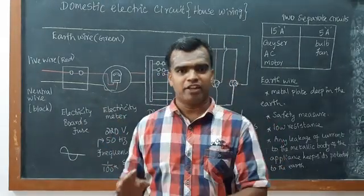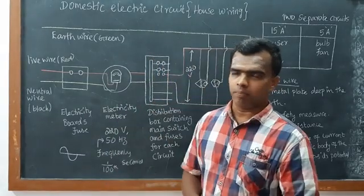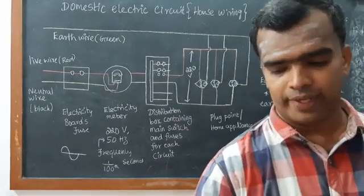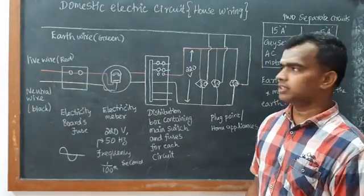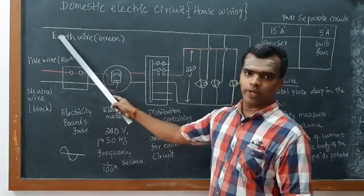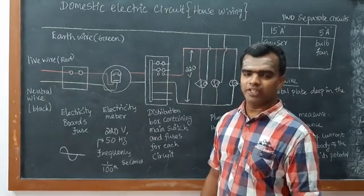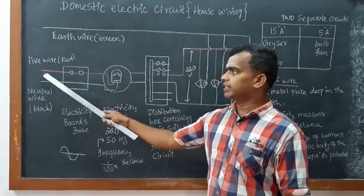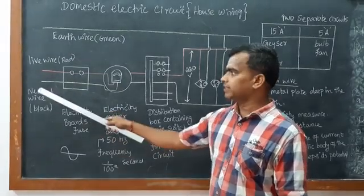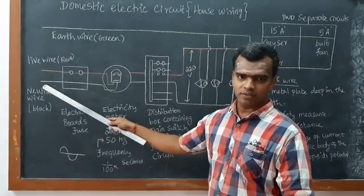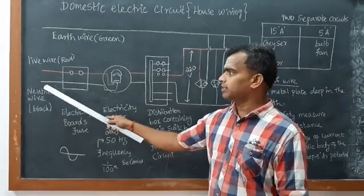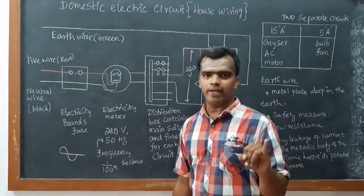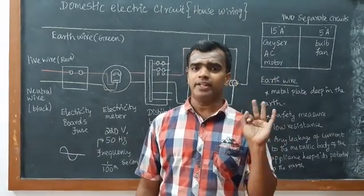Now move on to our topic. This is a systematic diagram of house wiring systems. Remember this general rule: we have earth wire which is always green in color for identification. This red color wire is called live wire, and this yellow one is the black wire - generally we say black wire, here it's yellow. This black color wire is the neutral wire. So red is live wire, black is neutral wire, and green is earth wire.